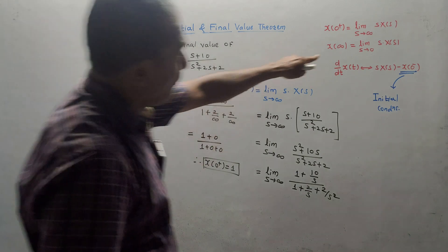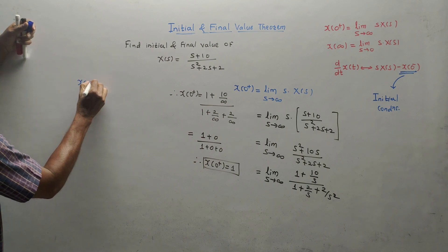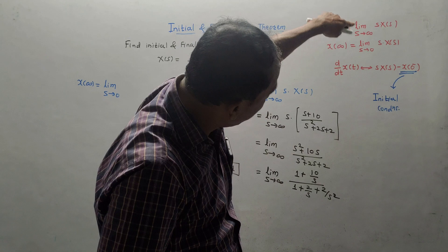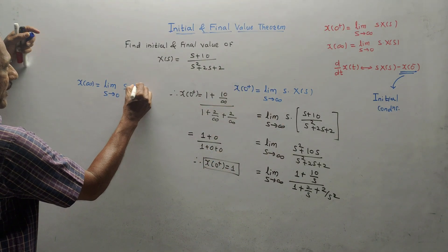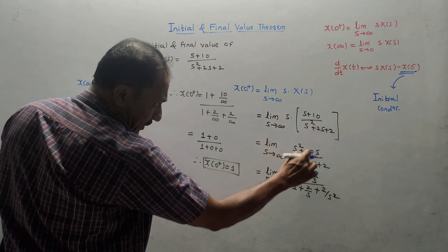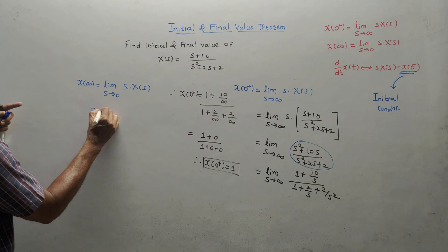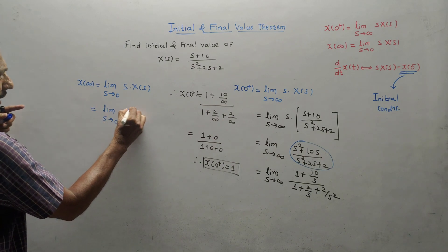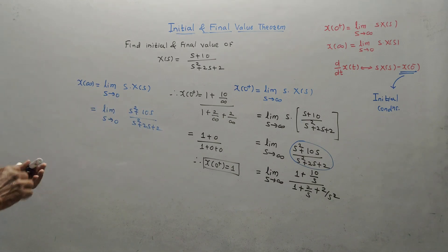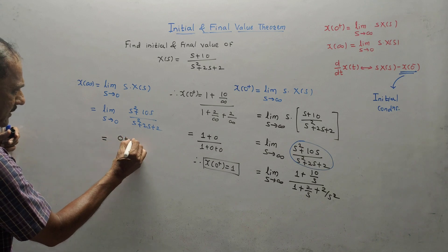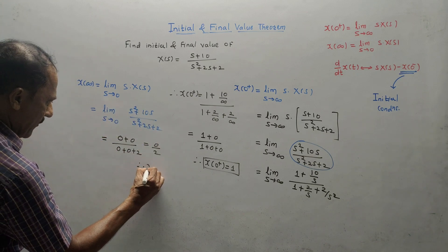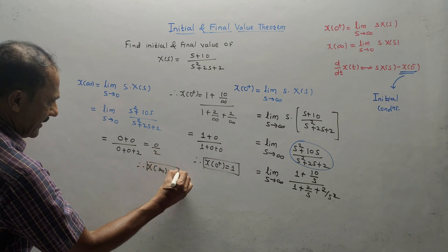Now let us calculate the final value. Final value x(∞) equals the limit as s tends to 0 of s·X(s). Remember: for final value the limit is s→0, for initial value the limit is s→∞. Using the already simplified expression: limit as s→0 of (s²+10s)/(s²+2s+2). Putting s=0: (0+0)/(0+0+2) = 0/2 = 0. Therefore the final value x(∞) equals 0.